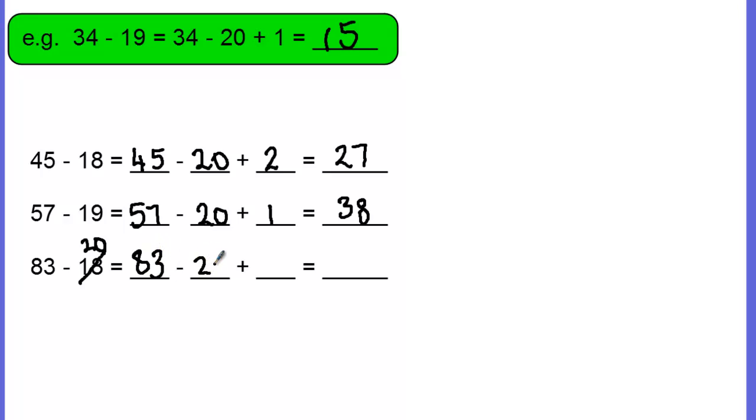And now we say 83 take 20 is 63, add 2 is 65, and that's how it works. Subtraction with compensation. Thanks for watching.